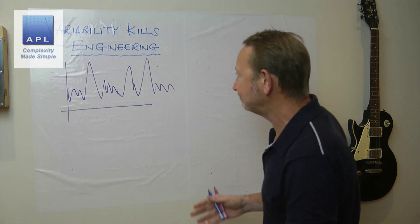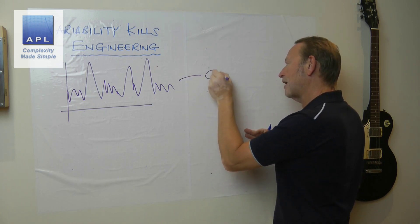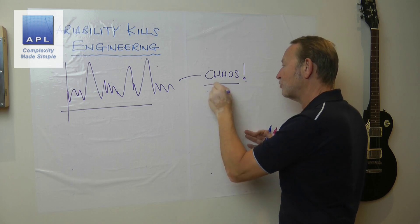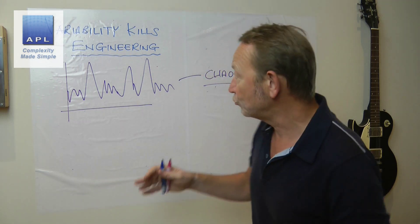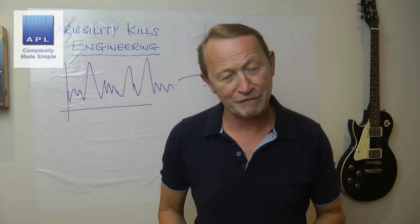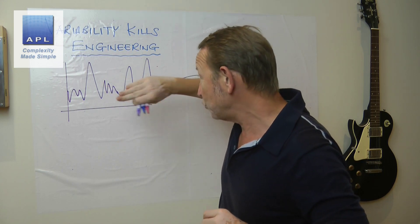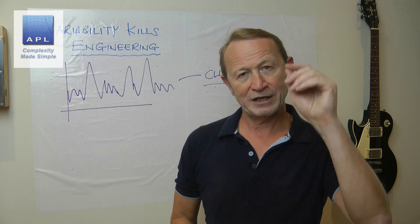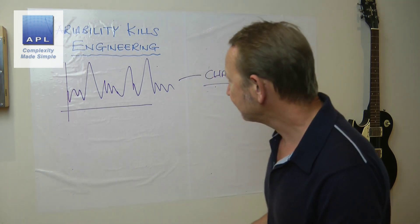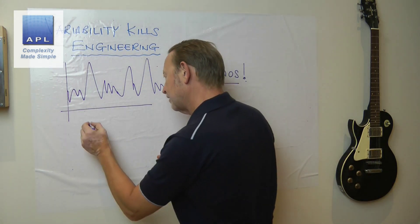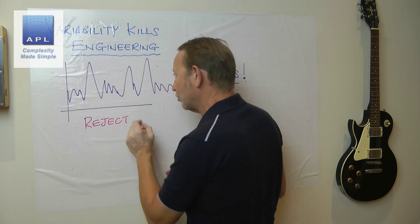Everybody's taught when they're solving a problem to solve for root cause, but the first thing you should look at is the variability of performance. You have a process and when the process is like this — all over the place — we would say that process is in chaos. It's not in a state of control, and therefore we don't want to go solving for root cause. The first thing you want to do is remove the variability.